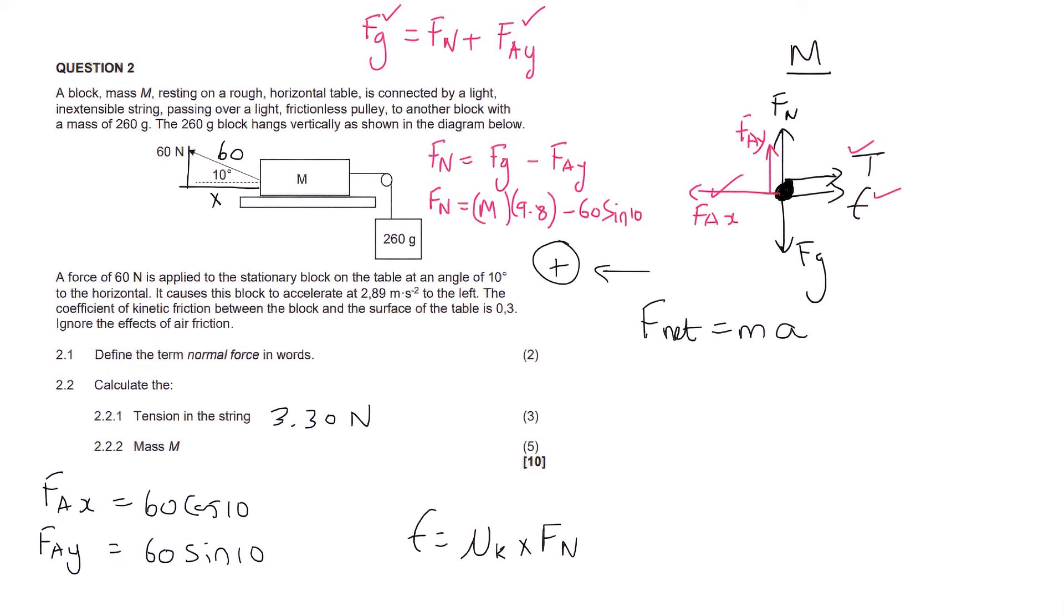And so we can go fill that in now. So we can say that this is going to be fAx. And so now going into F net equals MA, we can just say that it's the applied force in the horizontal direction minus the tension minus the friction, because we're going to the left. And then that's equal to MA. So the applied force in the horizontal direction is just going to be 60 cos 10. The tension force we worked out. And then the friction force is the coefficient, which is 0.3. And then the normal force is quite a long expression. It's all of this over here. So that's 9.8 M minus 60 sin 10. And then that's equal to the mass, which we don't know, times by the acceleration, which is still going to be 2.89.